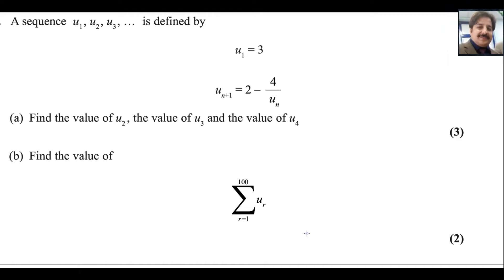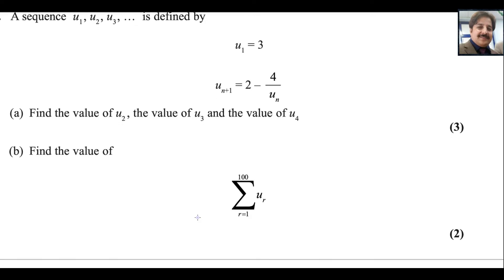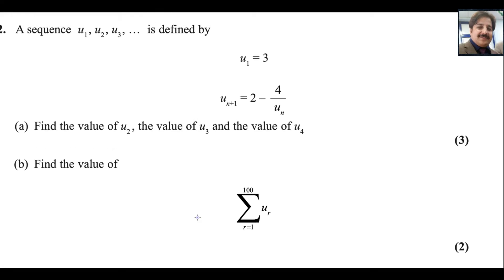Question number 2 from PureMatch 2 Pearson Dexel A-level exam, taken in October 2023. Let us read the statement. A sequence U1, U2, U3 continuous is defined by U1, which is equals to 3.